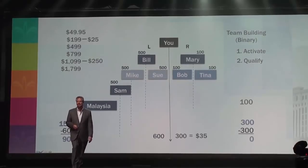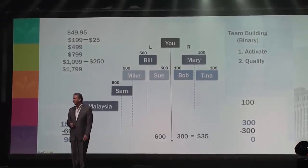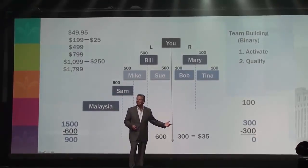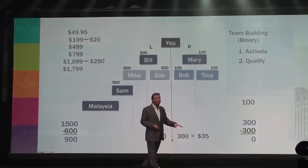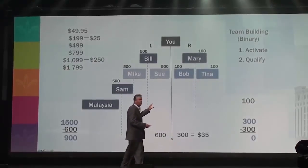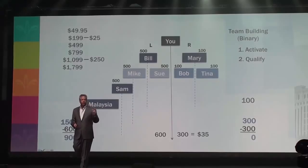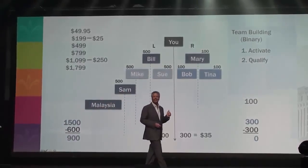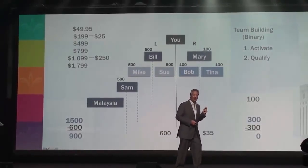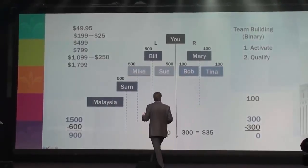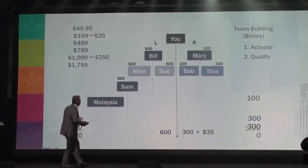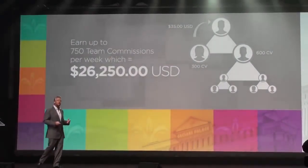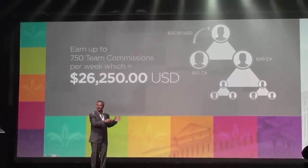Is that hot or what? So if that happens to you, what would you do? Build your right team. For every 300 points your right team generates, you get $35, $35, $35, $35. Do you know that you can earn up to $26,250 a week on just this part of the plan alone?